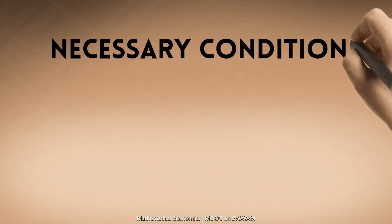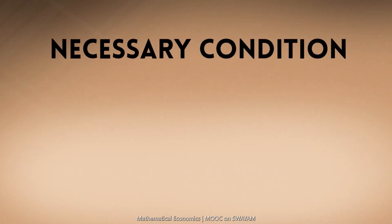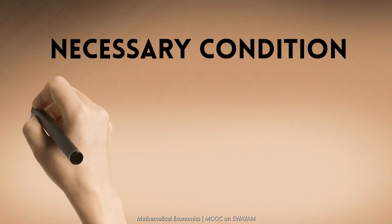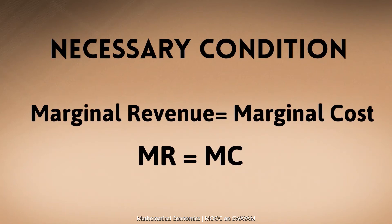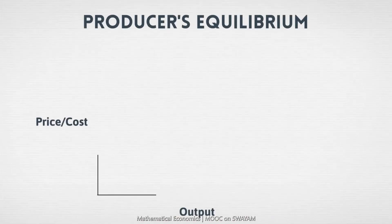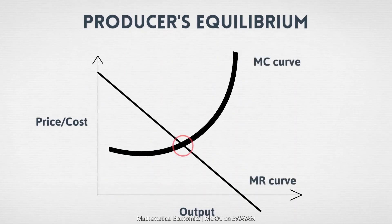Let us now get back to the conditions for profit maximization. The necessary condition says that marginal revenue is equal to marginal cost, or MR = MC. Graphically, we see that the MR curve and the MC curve intersect at a point and this point gives the equilibrium. At equilibrium, the slopes of the MR curve and MC are equal. Try to explore the reason from economic theory.